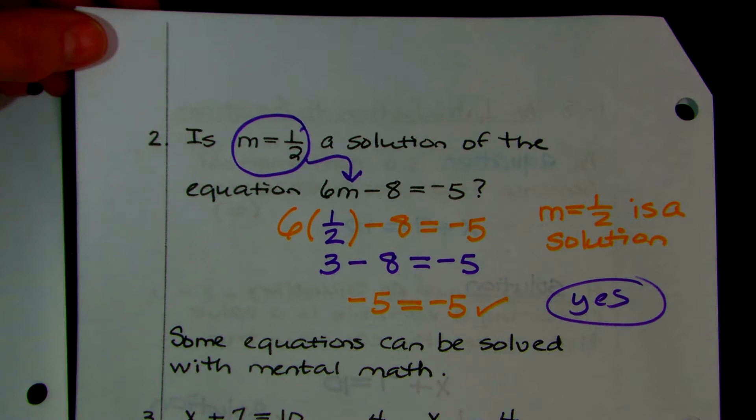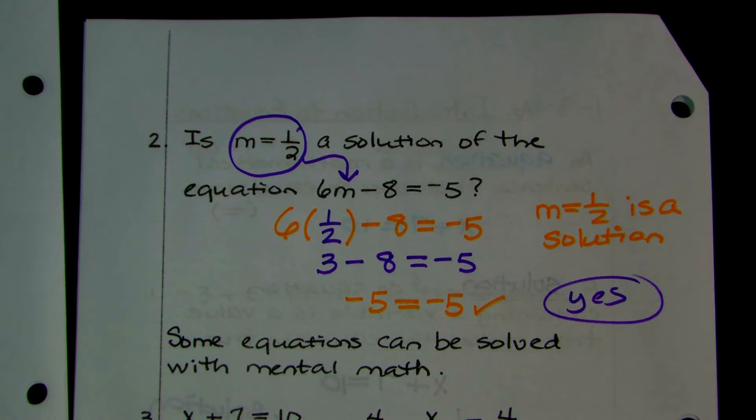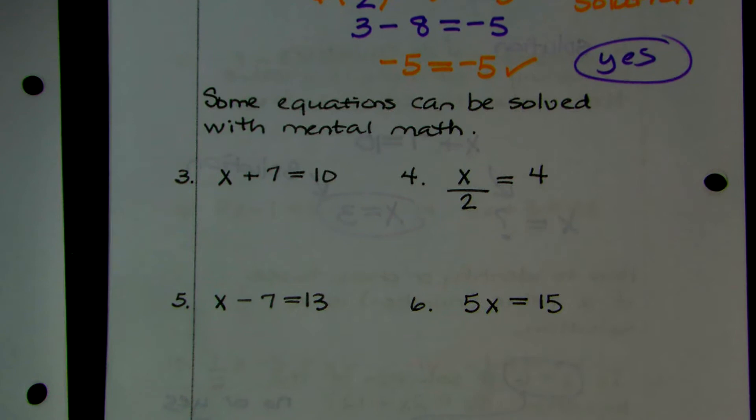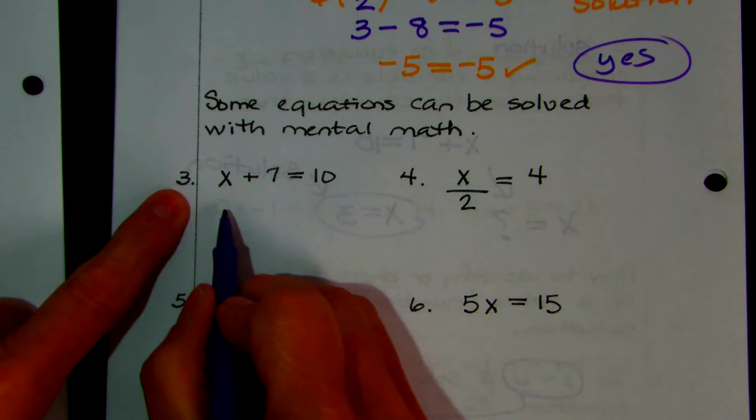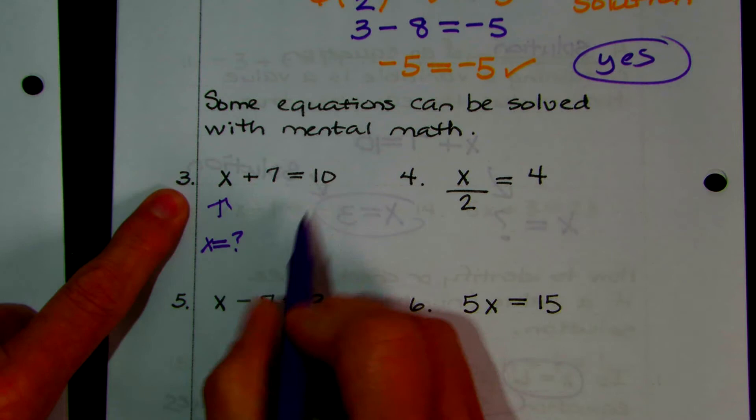If you want to check to see if a number is a solution — and this goes all the way to Algebra 2, exponential equations, logarithmic equations, any equations — you just substitute it in and make sure both sides are equal. Now, you can solve some equations with mental math. What does x have to be to add to 7 to get 10? x equals 3, because 3 plus 7 is equal to 10.